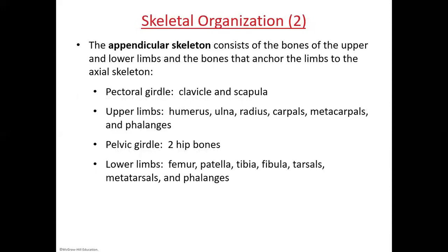The appendicular skeleton is the skeleton of the appendages — that's where it gets the name. These are all the bones in your upper limb and your lower limb, what we would call our arm and leg, and also the bones that anchor those limbs to the axial skeleton. Remember, the bones all have to touch if they're going to move the body. In your shoulders, we have what's called the pectoral girdle, where girdle means it's attaching the upper limb to the trunk. These two bones are your clavicle and your scapula, your shoulder blade.